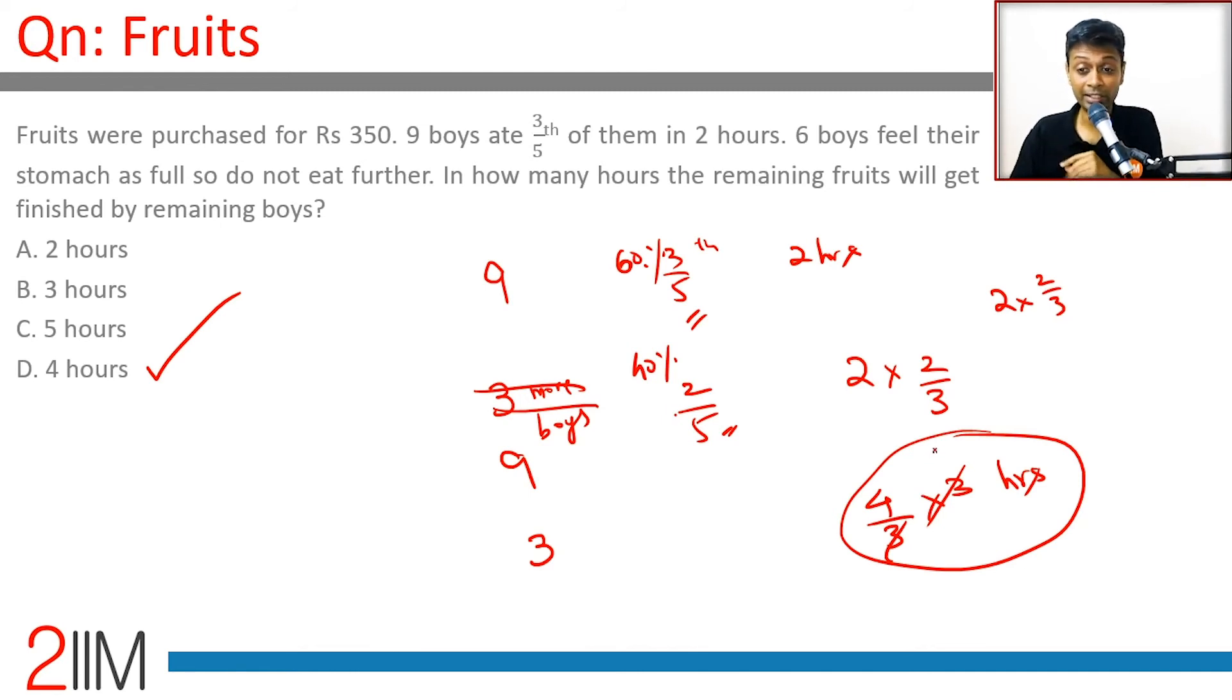If all 9 boys had been there, they can finish it in 4/3 hours. But only 3 boys are there, so they will take thrice as much time. 4/3 times 3 equals 4 hours.